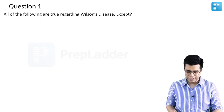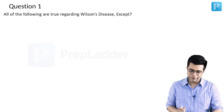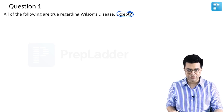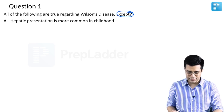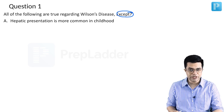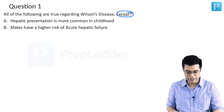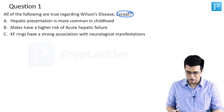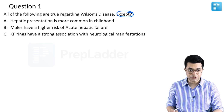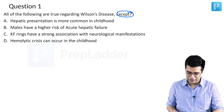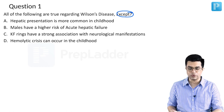The question says: all of the following are true regarding Wilson's disease, except. There are four statements. Option A: hepatic presentation is more common in childhood. Option B: males have a higher risk of acute hepatic failure. Option C: Kayser-Fresher rings have a strong association with neurological manifestations. Option D: hemolytic crisis can occur in childhood.